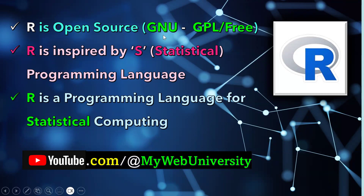R is open source under GNU, which stands for GNU is Not UNIX — a recursive acronym. It is licensed under the General Public License (GPL), meaning it is free and open to the general public. As long as you maintain the GPL, it is available to you and the public, and you can get the source and distribute it.